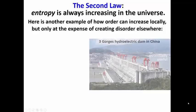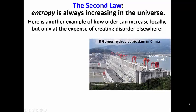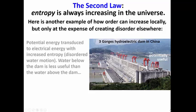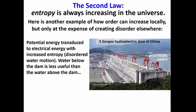Here's another example of how order increases locally, but at the expense of creating disorder elsewhere. This is a hydroelectric dam. The water in the lake has potential energy. The potential energy of this water will be transduced to electrical energy as it flows through the dam, but with increased entropy.